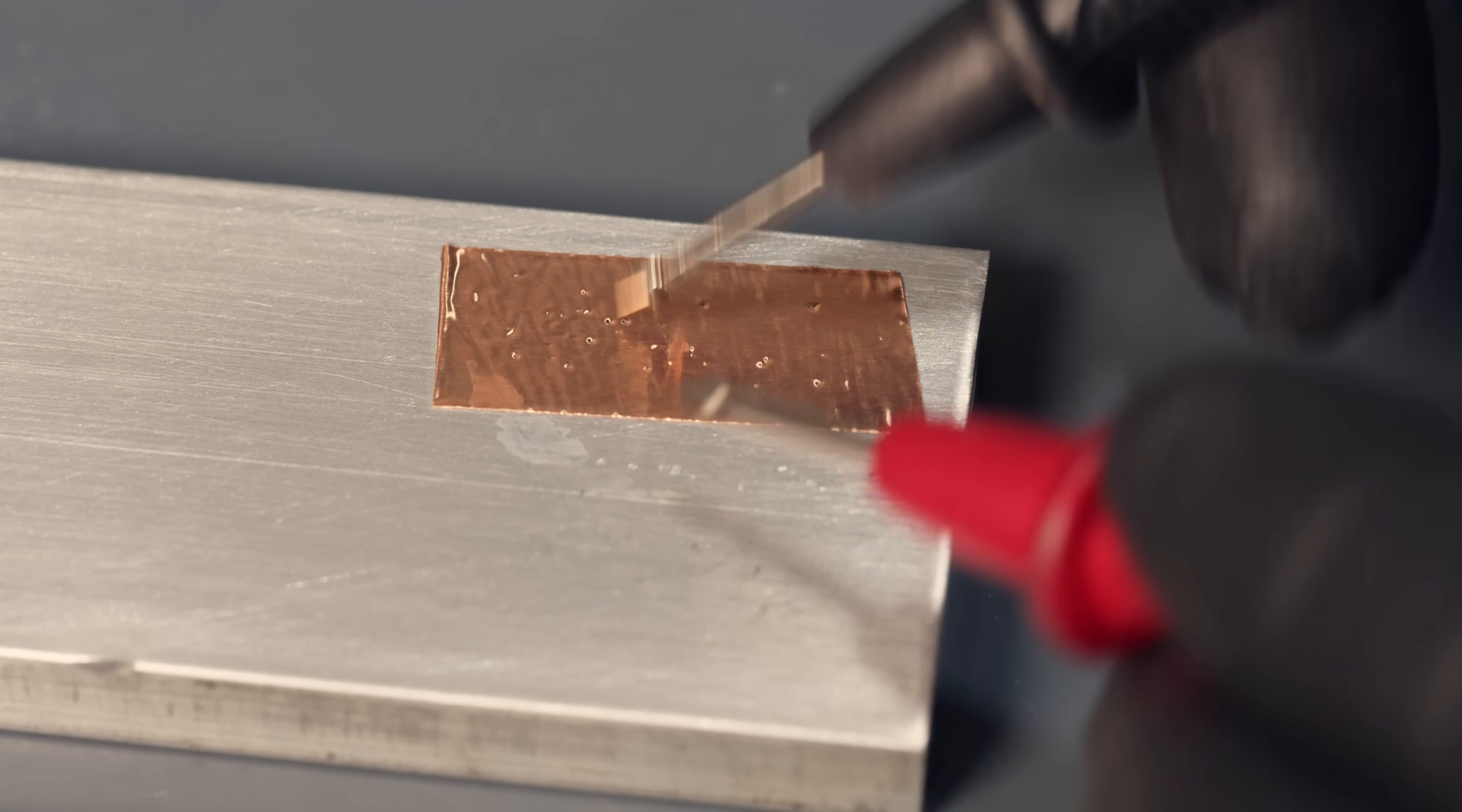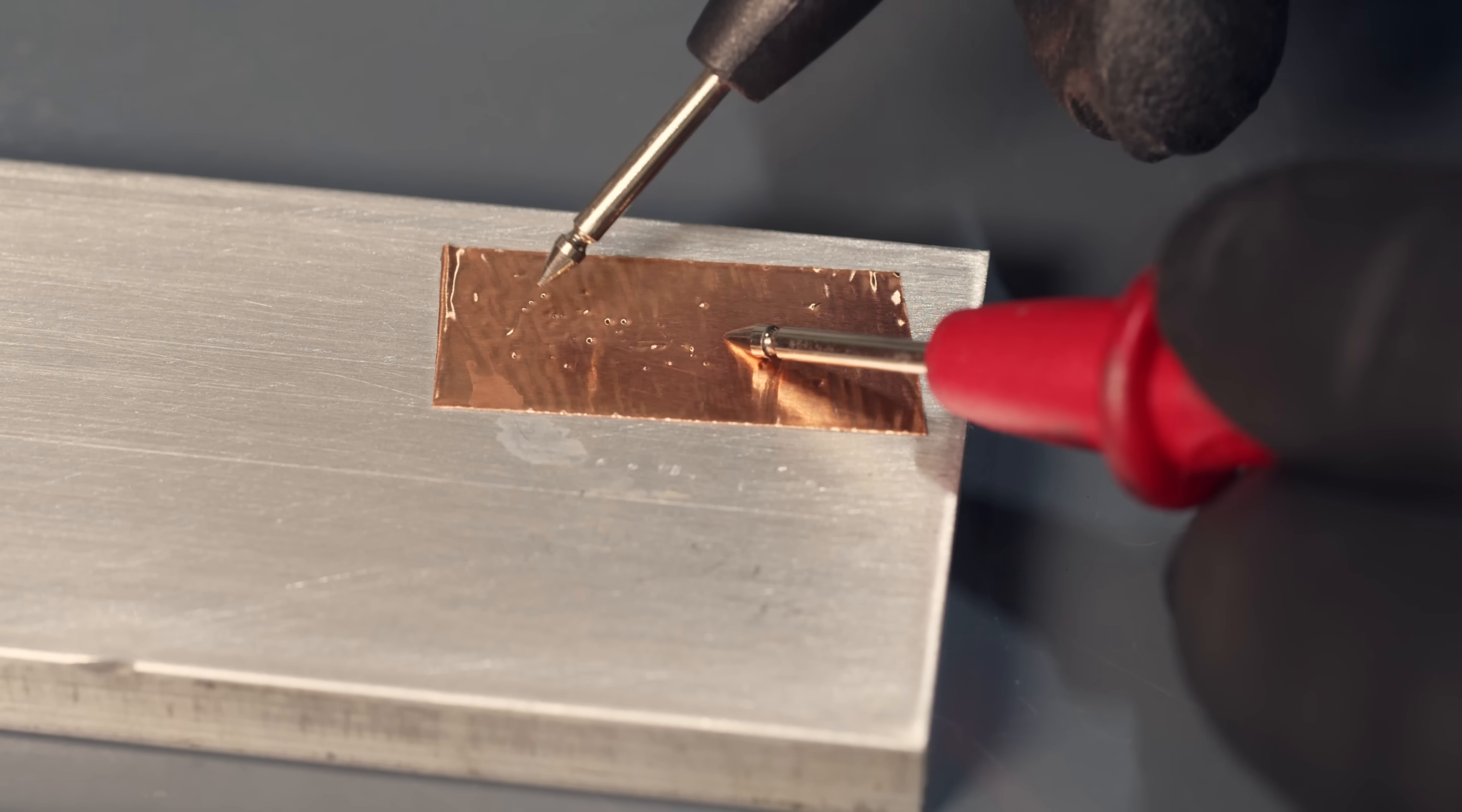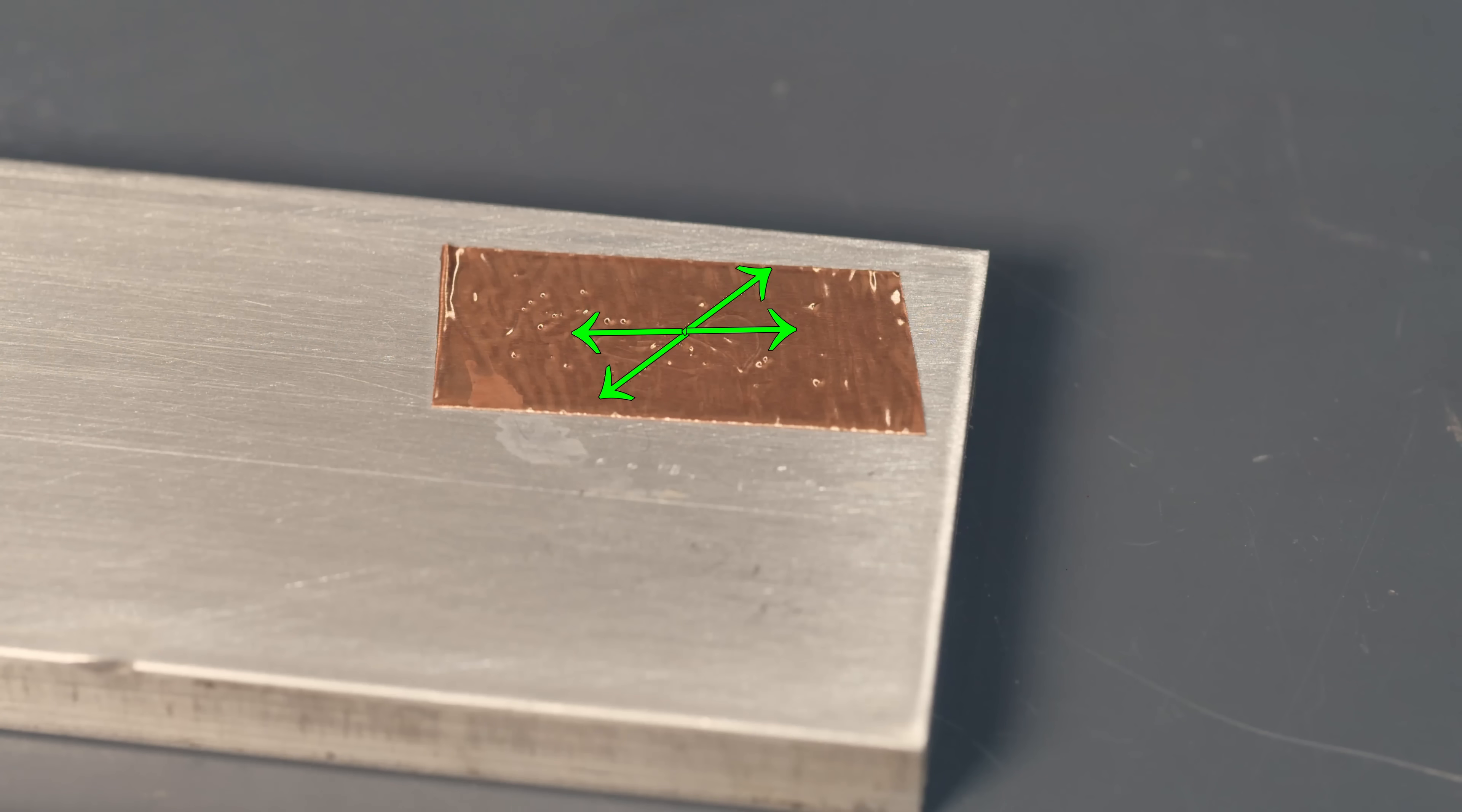But importantly, any two locations on the tape will also conduct. It's effectively conductive in all three dimensions. In the X and Y planes, across the surface of the tape, as well as through the Z axis, through the thickness of the tape. And so this just won't work for our LCDs because the tape will connect all the traces together, which is obviously not what we want.